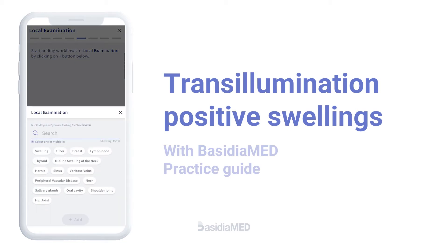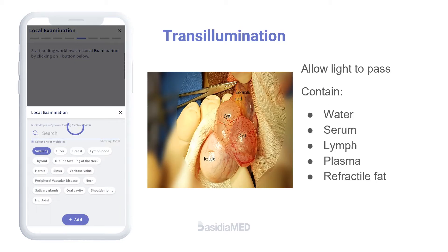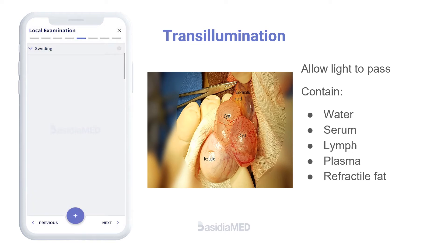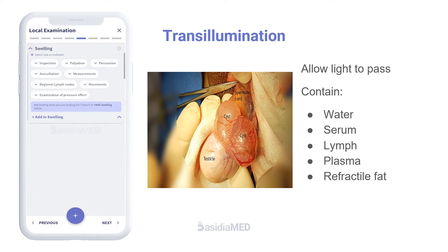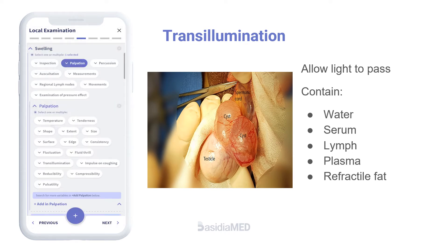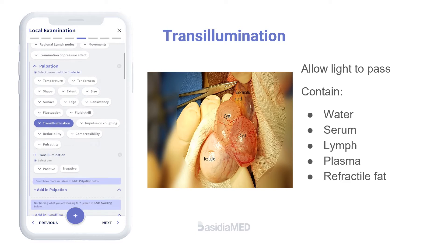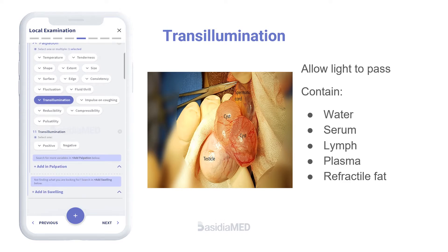Transillumination positive swellings allow light to pass through them. They contain water, serum, lymph, plasma, or refractal fat.